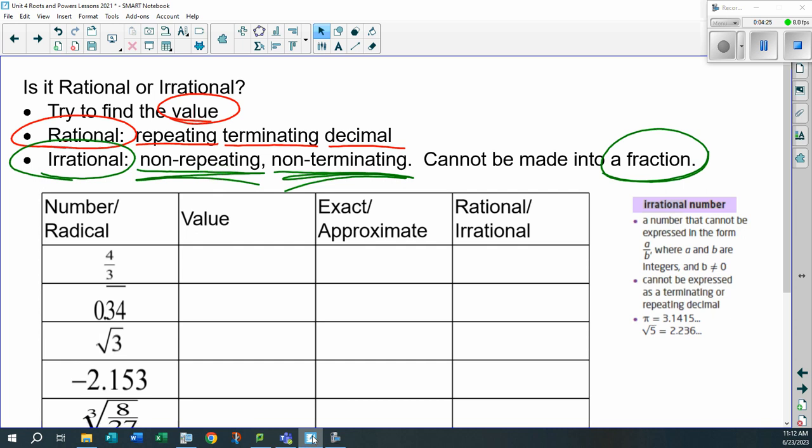Let's go back to our lesson here. So first thing we should do is we should see what the value is, and then ask yourself, is this an exact value or is it an approximate value? What do I mean by approximate? Approximate means that I'm going to be rounding. If I'm going to round this thing and if I have to round this thing, that tells you right away it's going to probably be irrational.